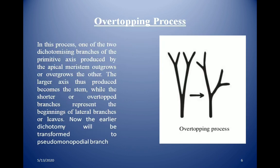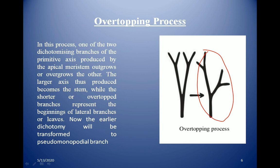In the overtopping process, one of the two dichotomizing branches of the primitive axis produced by the apical meristem outgrows the other, so that one axis becomes long and the other becomes short. The longer axis further forms the stem, while the shorter or overtopped branch represents the beginning of lateral branches. The earlier dichotomy is thus transformed into a pseudo-monopodial branch, moving from dichotomous branching toward pseudo-monopodial branching.